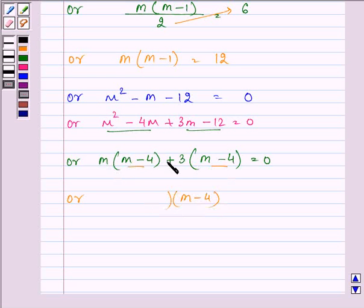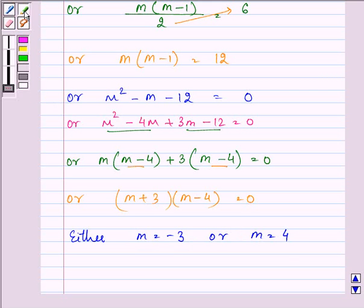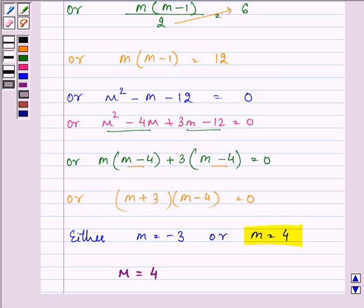That means either m is equal to minus 3 or m is equal to 4. Since in the question it is mentioned to find out the positive value of m, our required answer will be m is equal to 4, since m cannot be equal to minus 3.